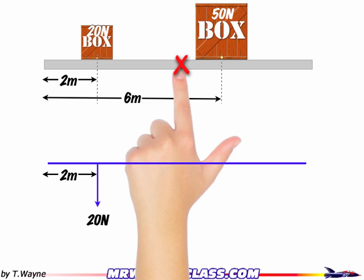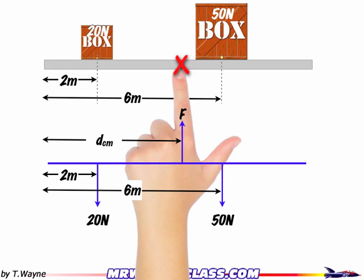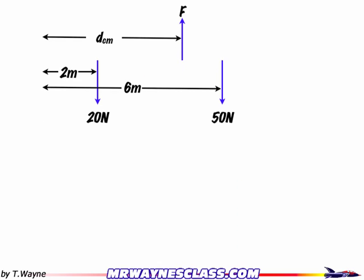There's the 20N box acting on the beam. There's the finger pushing up at the location of the center of mass acting on the beam. And then there's the 50N box acting on the beam. So now this is my extended free body diagram.